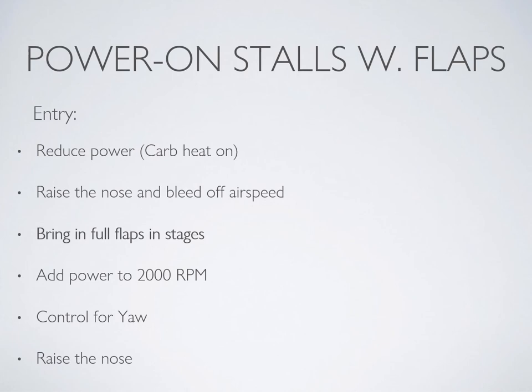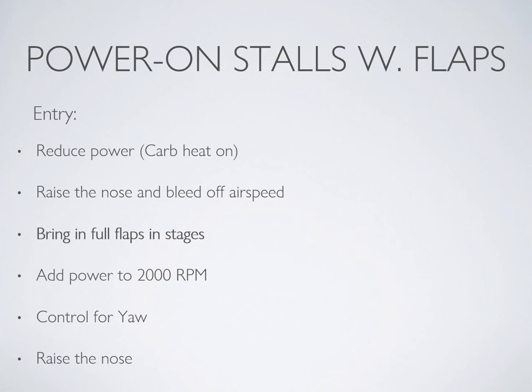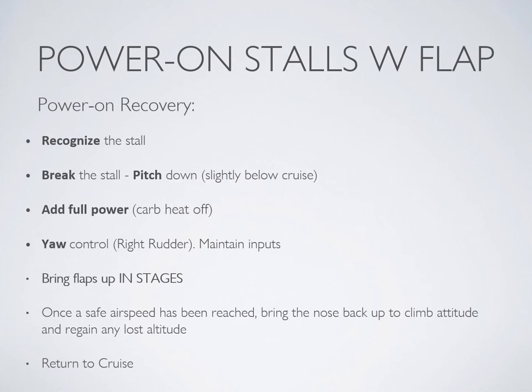The process for entering a power on stall with flaps is pretty much the same as entering a regular power on stall. The key difference is bringing in the flap — you want to bring the flaps in before you add the power, and after you've come into the white arc. Stall recognition and recovery are the same. First, recognize the stall, break it by pitching the nose down to just below level cruise, add full power, then bring the flaps up in stages once a safe airspeed has been achieved. Lastly, recover as usual back to your original heading, altitude, and airspeed.